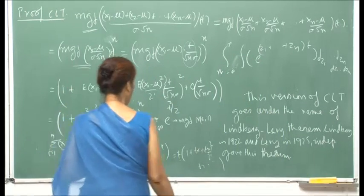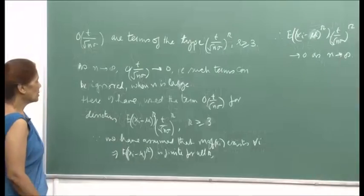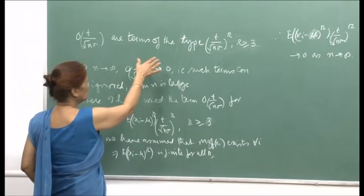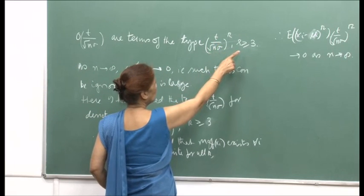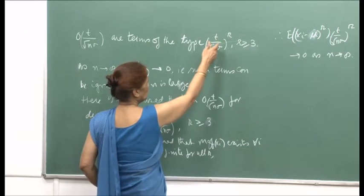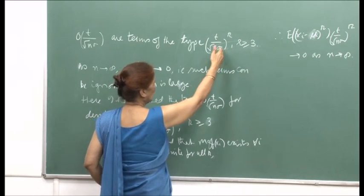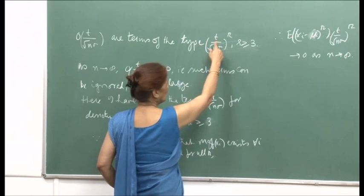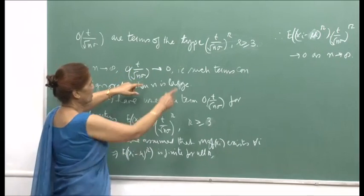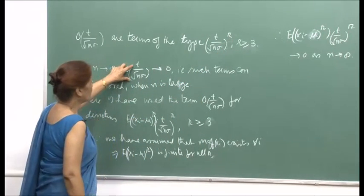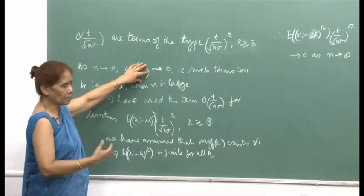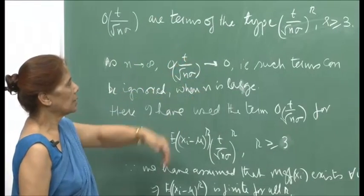Using the MGF, the proof simplifies significantly. In the proof I used the notation small-o of t/(sqrt(n)*sigma), which denotes terms of the type t/(sqrt(n)*sigma) raised to power r, for r >= 3. As n becomes larger, these terms become very small. Since the MGF exists, all moments are finite, so the expectation of (x_i - mu)^r is finite for all r. Hence, those higher-order contributions go to 0, and their contribution is negligible for large n.